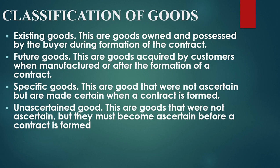Classification of goods. The first classification is existing goods — these are goods owned and possessed by the seller during the formation of the contract. For instance, in a kiosk the seller possesses the flour, and when you purchase it, it becomes yours. Future goods are goods acquired by customers when manufactured or after the formation of a contract. For instance, a school contracts a carpenter to manufacture desks. After manufacturing and delivering the desks, the contract is executed.